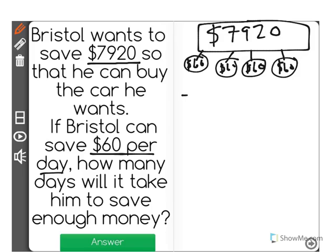So really what we're doing is we're taking the $7,920 and we're dividing it by the $60 per day to find out how many days it will take.